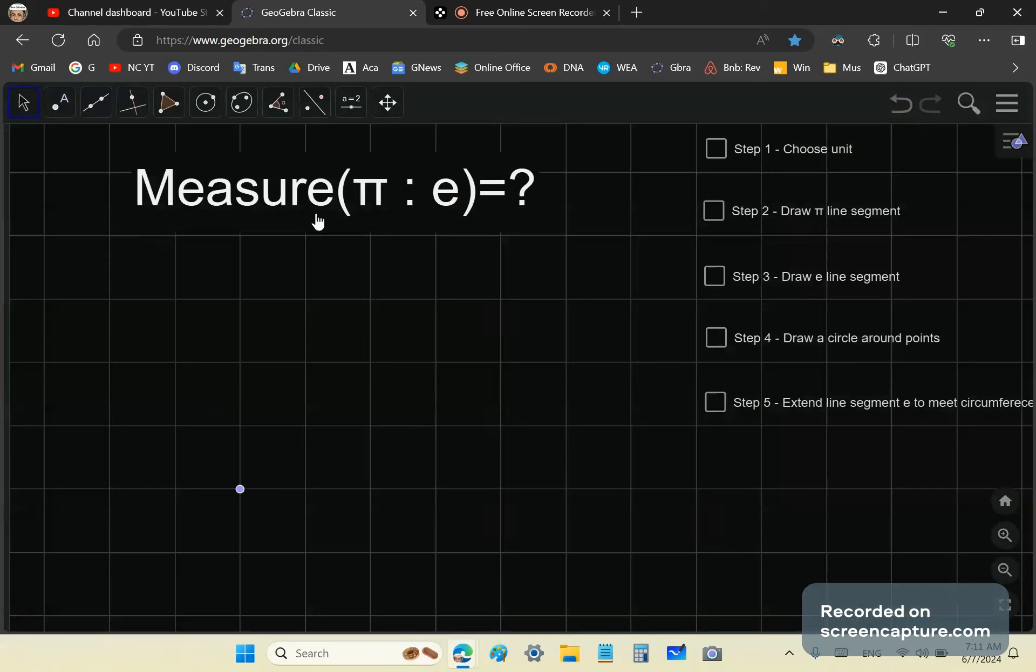For example, you could find the exact value for pi divided by E, which is really the measure of pi using E as a unit. I'll show you very quickly how to do that.